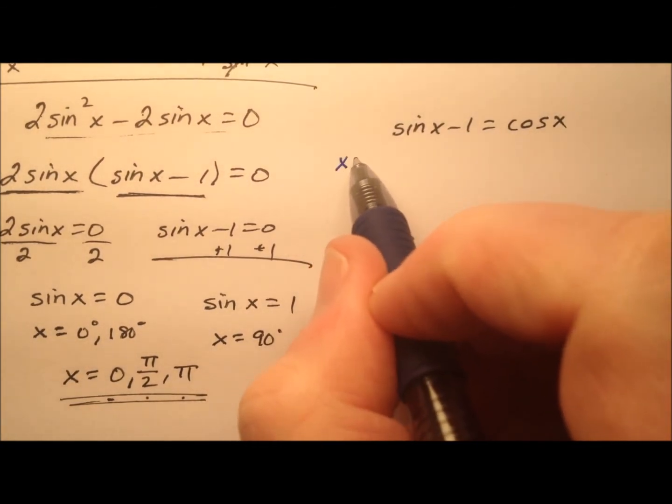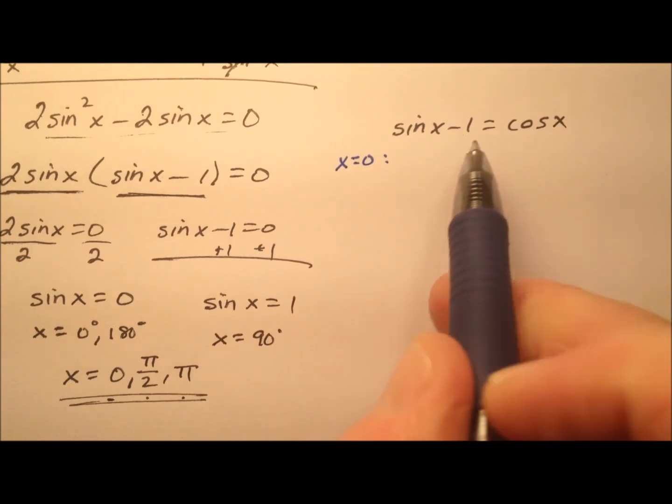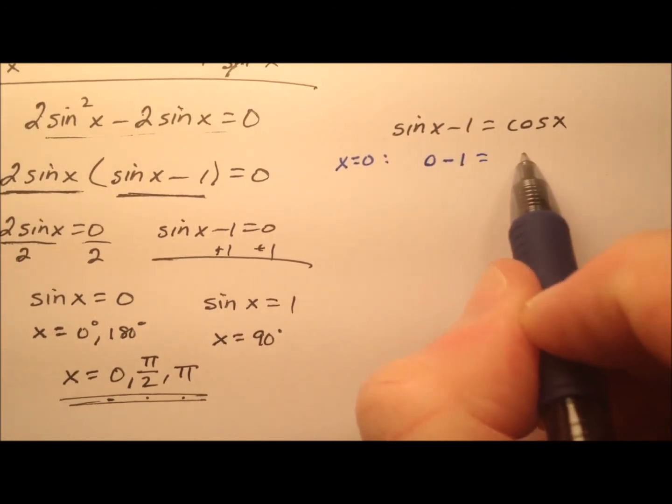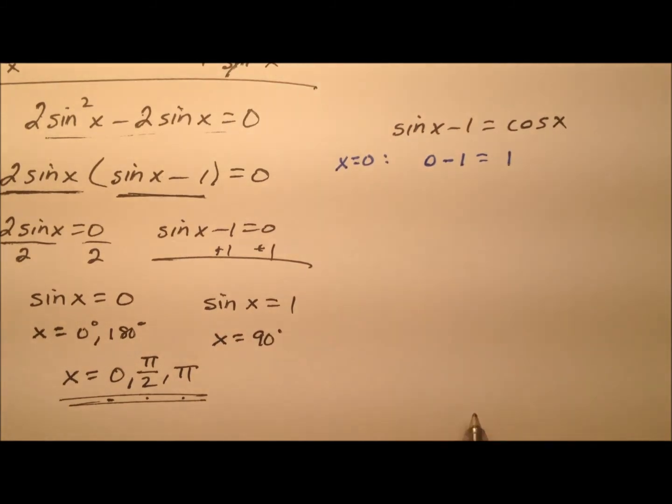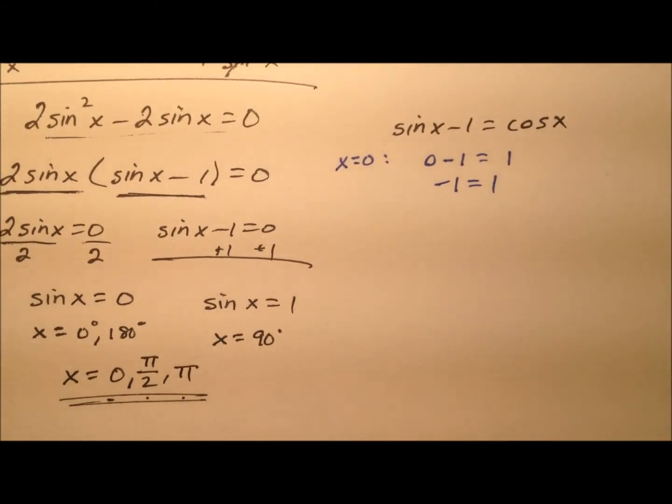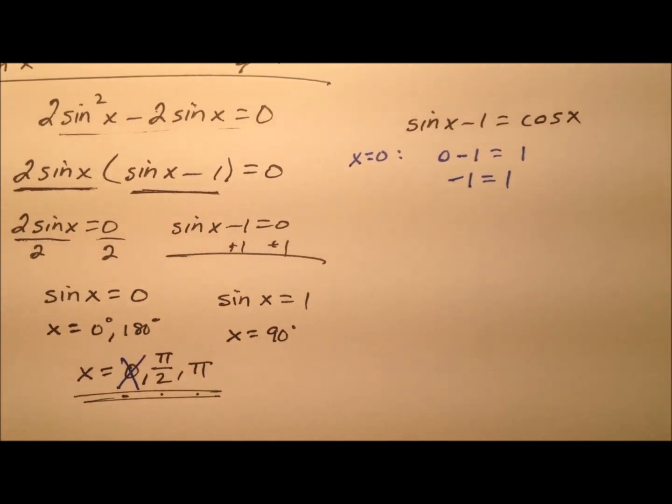So let's try the first one, x equals 0. So the sine of 0 is 0, 0 minus 1. And the cosine of 0 is positive 1. So negative 1 equals positive 1. Well, that's not true. So this 0 will not work.